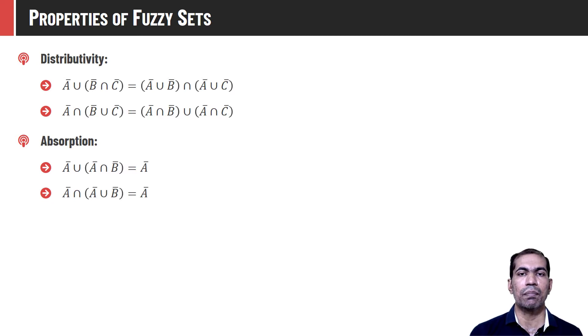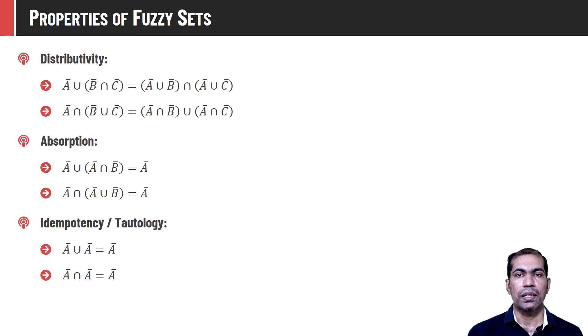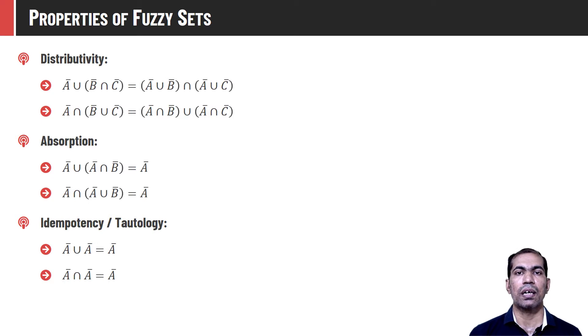The idempotency property states that A union A equals A, and A intersection A also equals A — the same set itself.